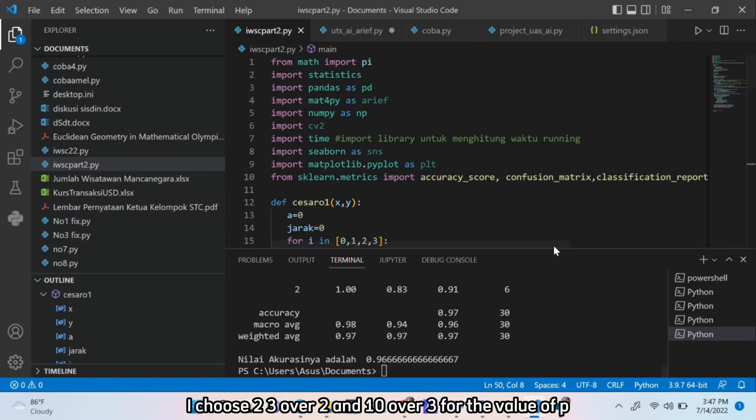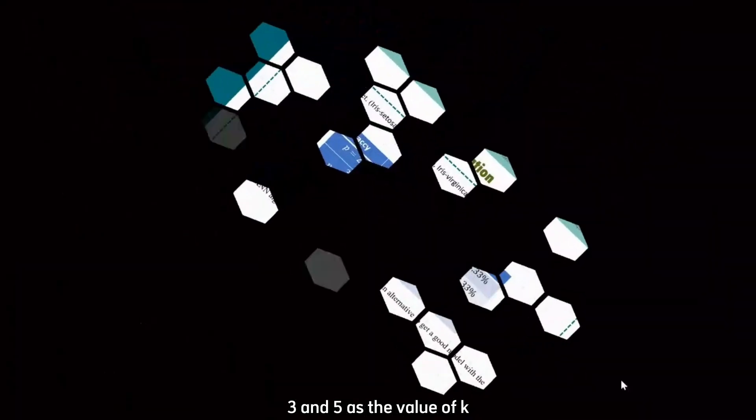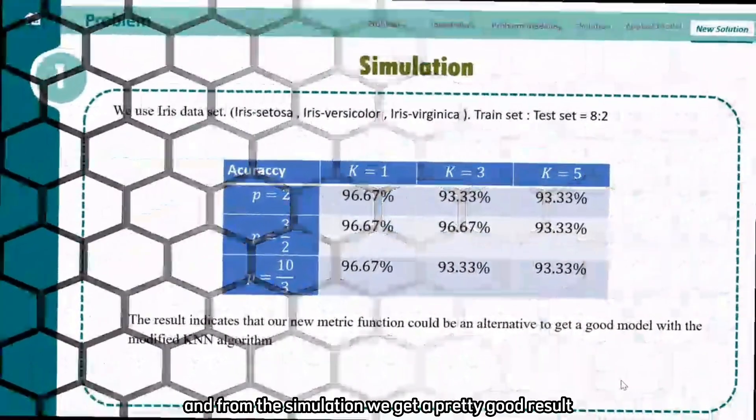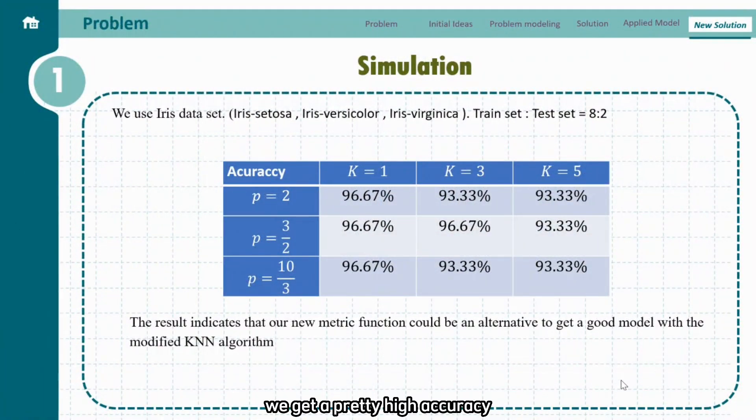I choose 2, 3 over 2, and 10 over 3 for the value of p, and I choose 1, 3, and 5 as the value of K. And from the simulation, we get a pretty good result. We get a pretty high accuracy, and from this result it indicates that our new metric function could potentially be one of the alternatives to get a good model with the modified KNN algorithm.